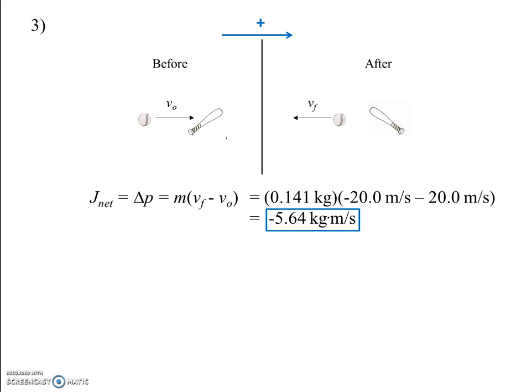In finding the average net force — and don't worry about the average part of it, just find net force like usual — using our new terms, you would do sigma F equals delta p over delta t, or J net over delta t. You should get 113 newtons to the west, or with our sign convention, if east is positive, negative 113 newtons. The baseball comes in from the east, and the bat force points west to send it back.